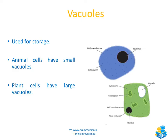Vacuoles are found in both plant and animal cells, and they're used for storage. Animal cells have very small vacuoles, so sometimes they're not labeled, as is the case in this diagram. Whereas plant cells have large vacuoles, which can actually take up 90% of the space inside a cell. Vacuoles are used to store things like water, food, and also sometimes waste.